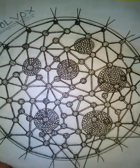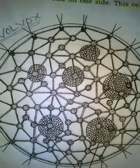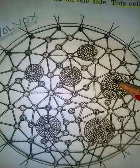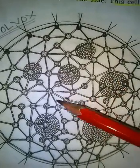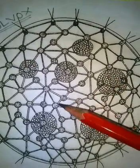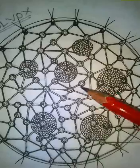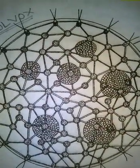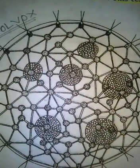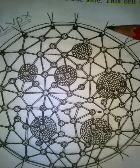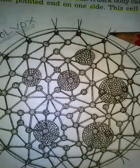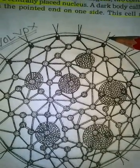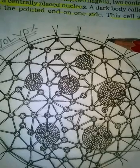The colony is hollow, spherical or oval in shape. The number of cells in a colony varies from 500 to 60,000. It is commonly known as a rolling alga because during swimming, the colony rotates on its axis as flagellar movement takes place.